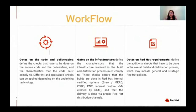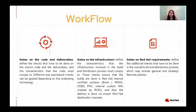These Gates have been divided into three main categories. First is Gates on the code and deliverables, then Gates on the infrastructure, and then Gates on Red Hat requirements. Gates on the code and deliverables define the checks that have to be done on the source code and deliverables, and the characteristics the code must comply to. Different and specialized checks can be applied depending on the underlying technology. Gates on infrastructure define the characteristics that the infrastructure involved in the build and distribution process must comply to, ensuring that builds are done in proper Red Hat internal certified systems such as BREW, OSBS, PNC, and that delivery is done via a proper Red Hat distribution channel.